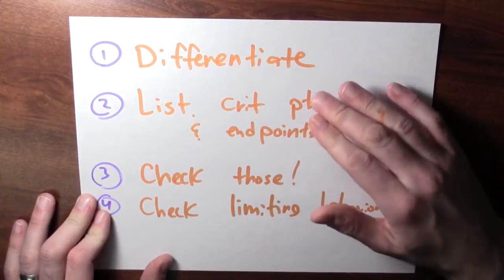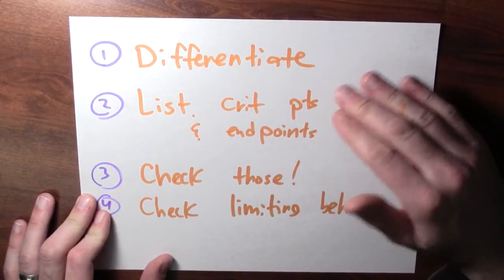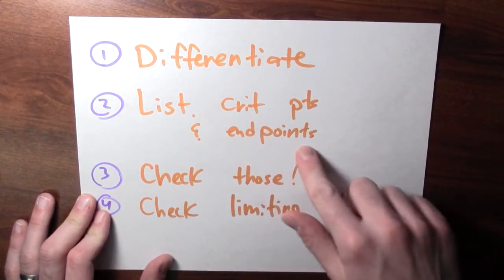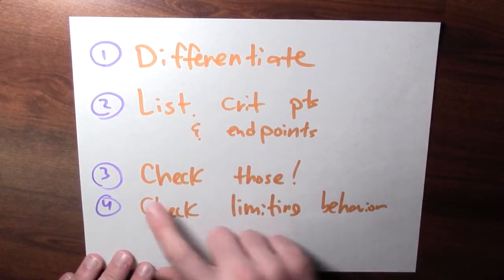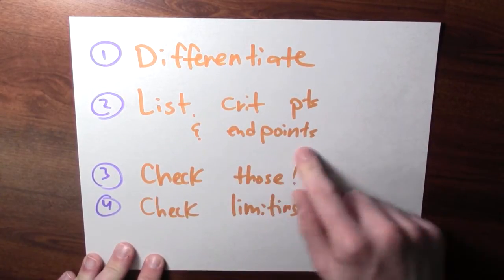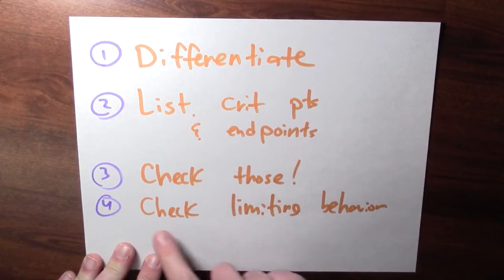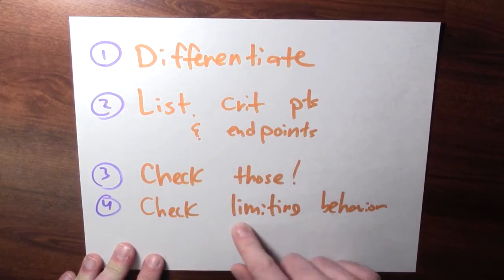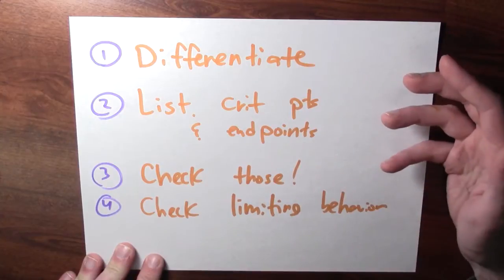Critical points are places where the derivative is equal to 0 or the derivative isn't defined. Also, list the endpoints if they're included in your domain. Check the endpoints and check the critical points. And potentially, you also need to check the limiting behavior if you're working on an open interval.